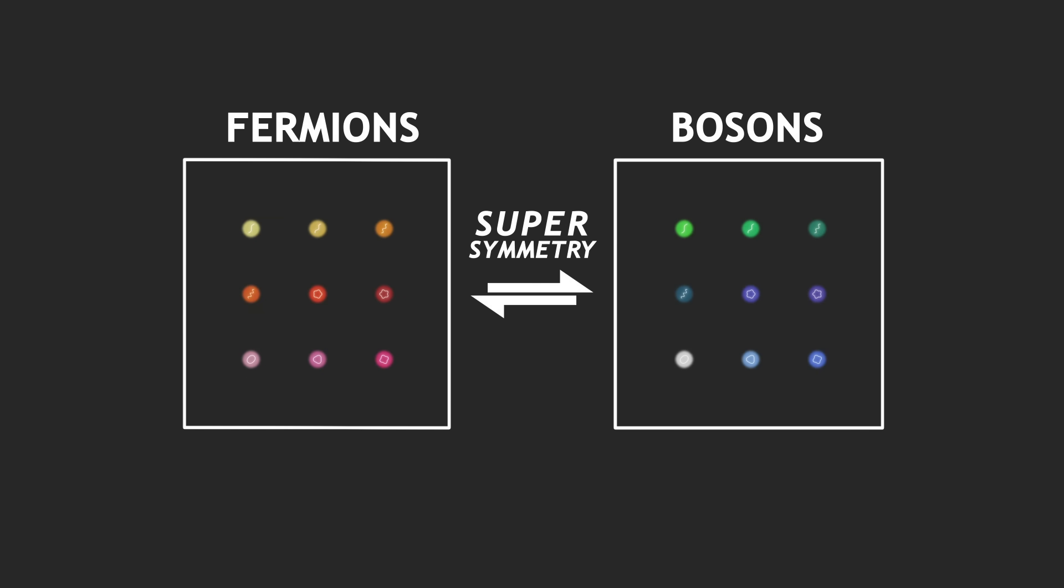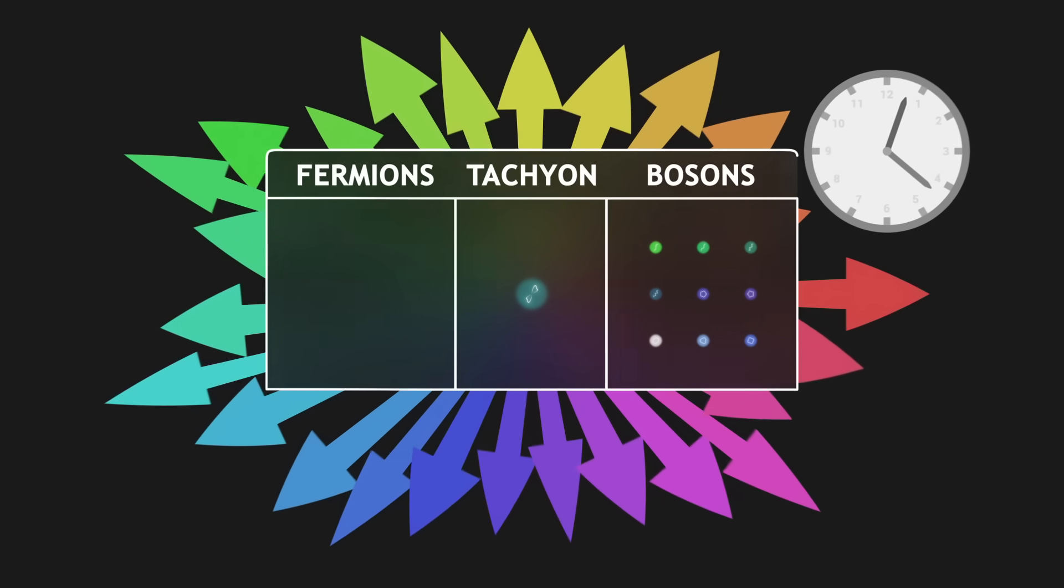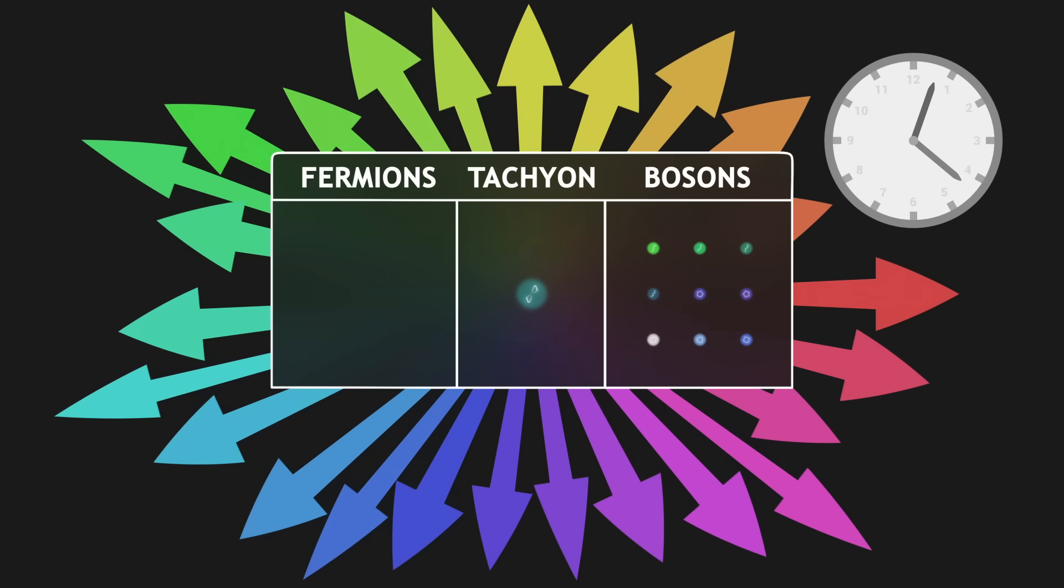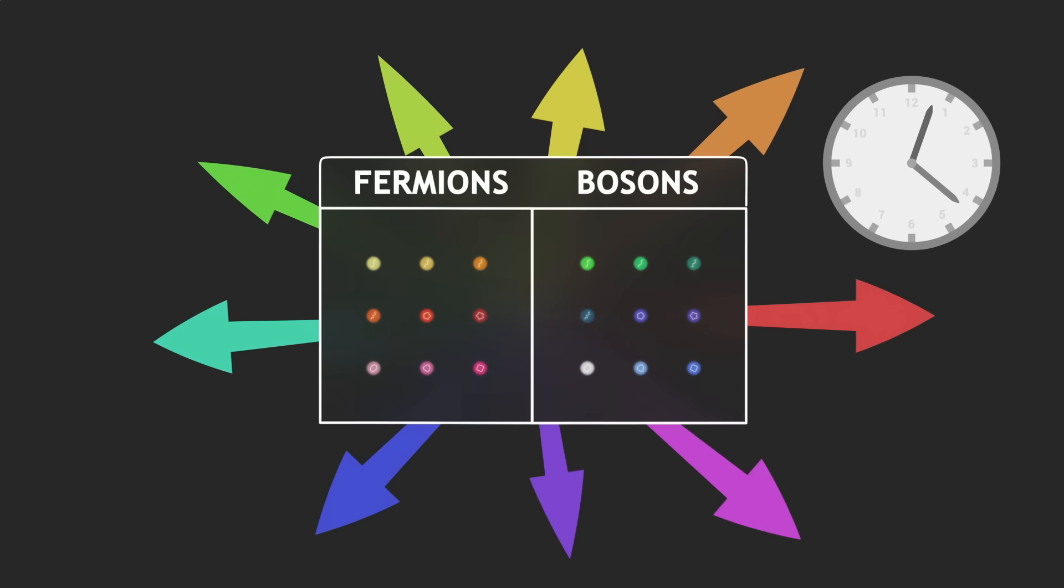What about the third problem? Before we included supersymmetry, the mathematics required a 26-dimensional universe. Now, super-string theory requires a universe with 10 dimensions. Unfortunately, this third problem is not resolved. The theory does not seem to fit our universe, which only has four dimensions.